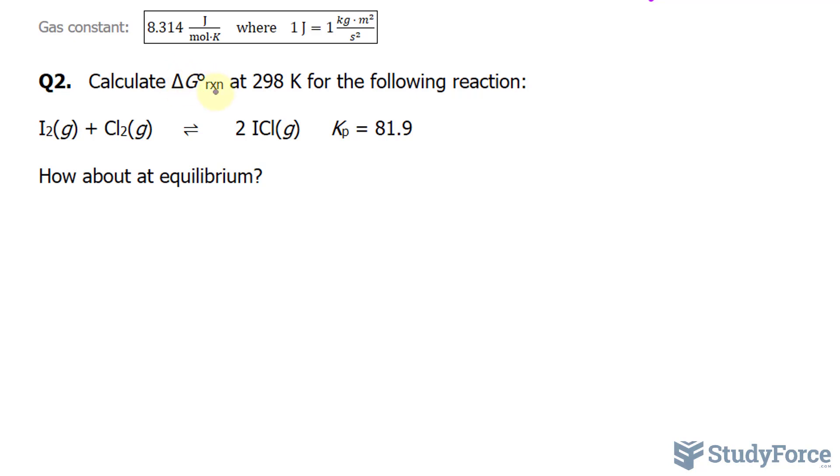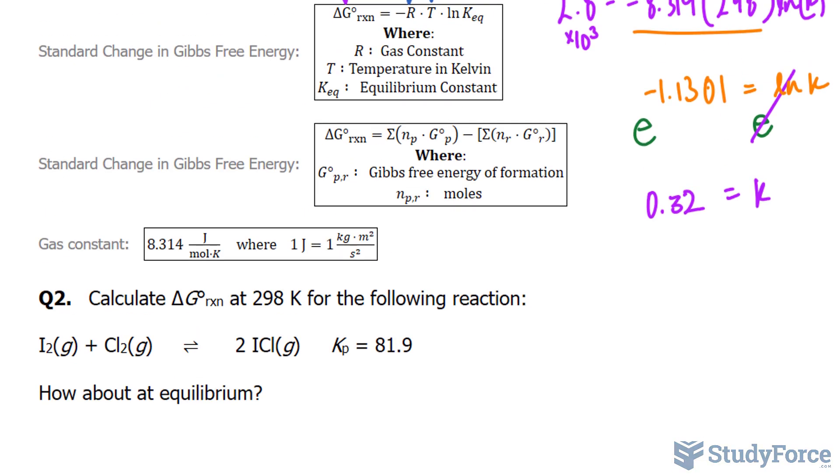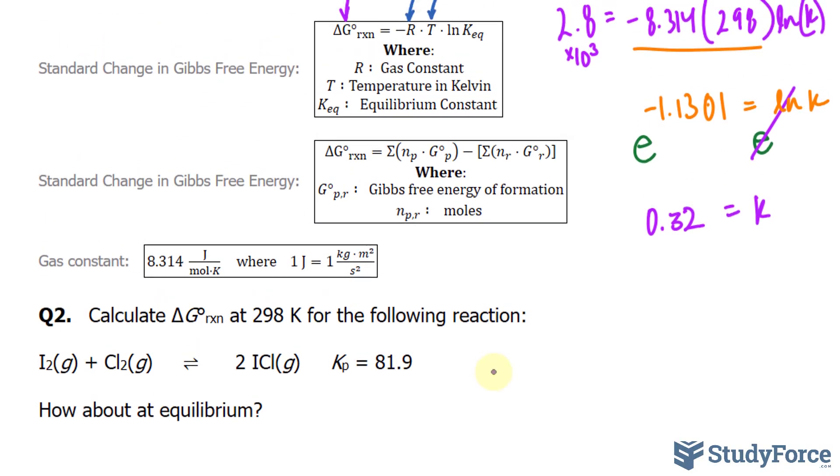So let's start by calculating delta G, and we'll use the exact same formula as before. That formula was delta G is equal to negative 8.314 multiplied to the temperature of 298, and we've been given the constant this time, so this is actually easy, 81.9.